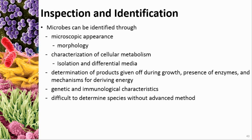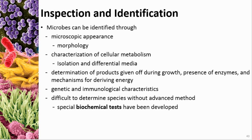It's difficult to determine species without advanced methods, and it's also more time-consuming. Biochemical tests have been developed that make identifying specific types of bacteria very simple based on what is known about them. Things like strips and different chemical reactions use the fact that specific bacteria give off specific byproducts that cause certain chemical reactions, allowing much faster testing than was previously possible. We'll talk about these techniques in a later chapter — Chapter 15.